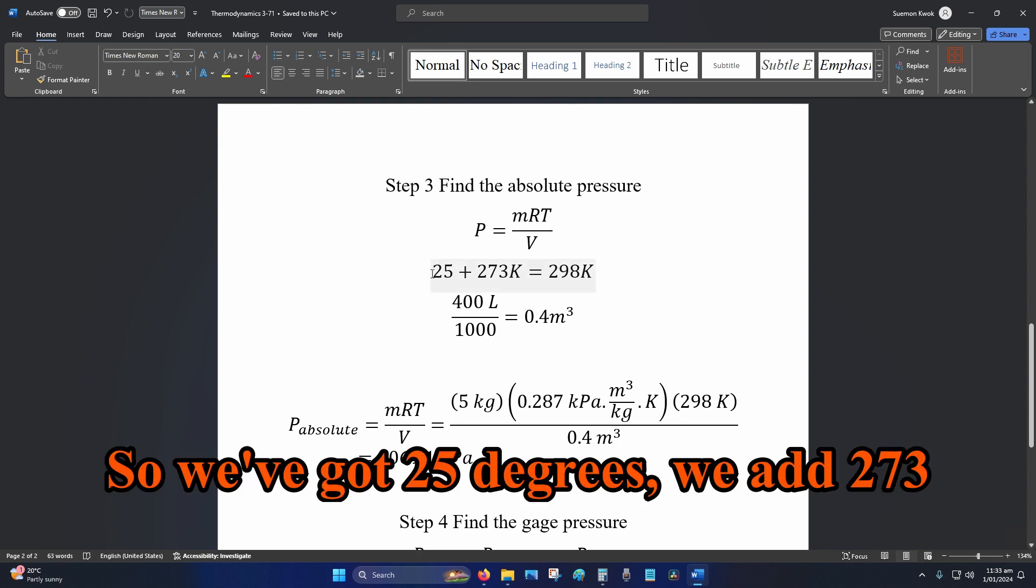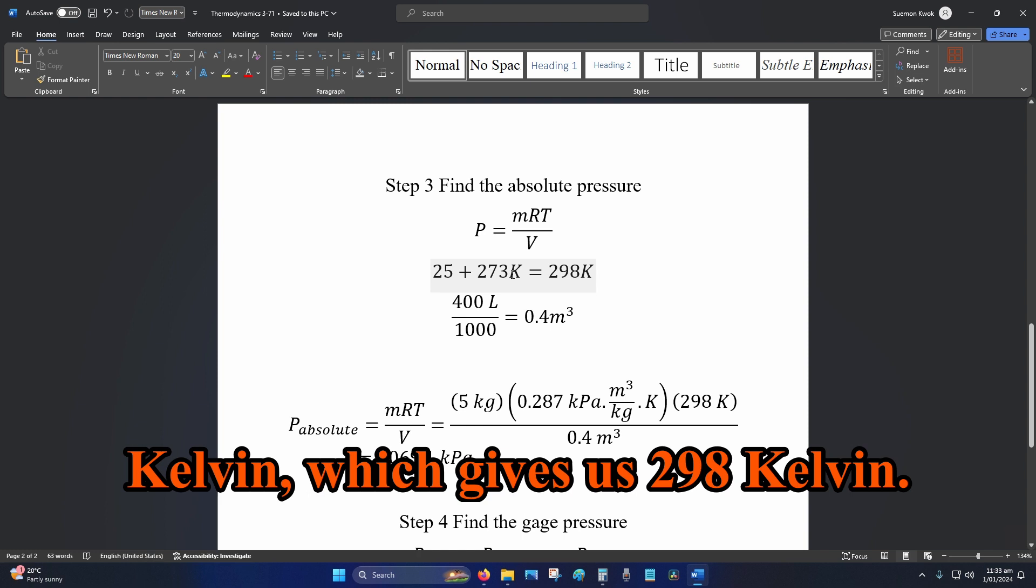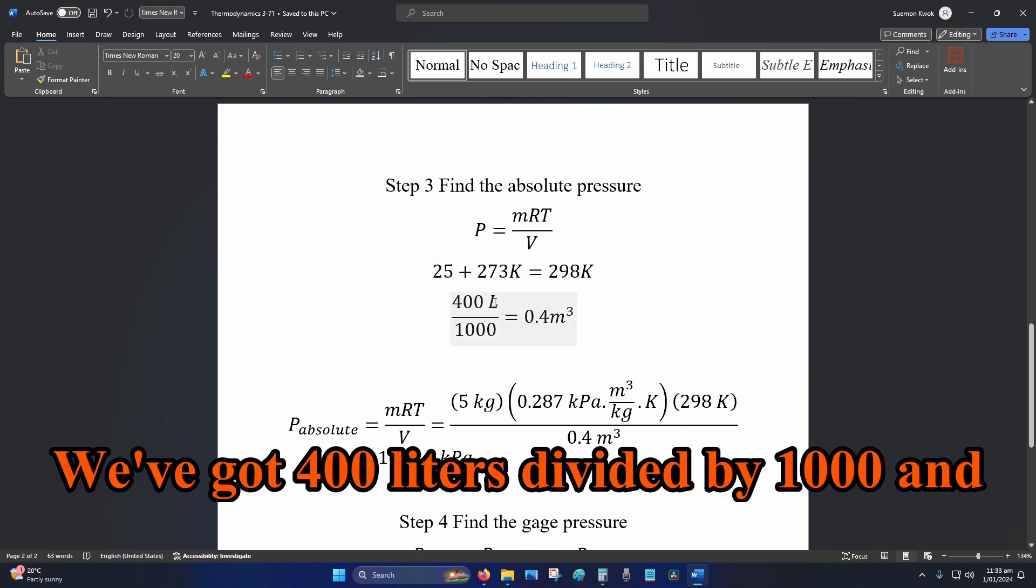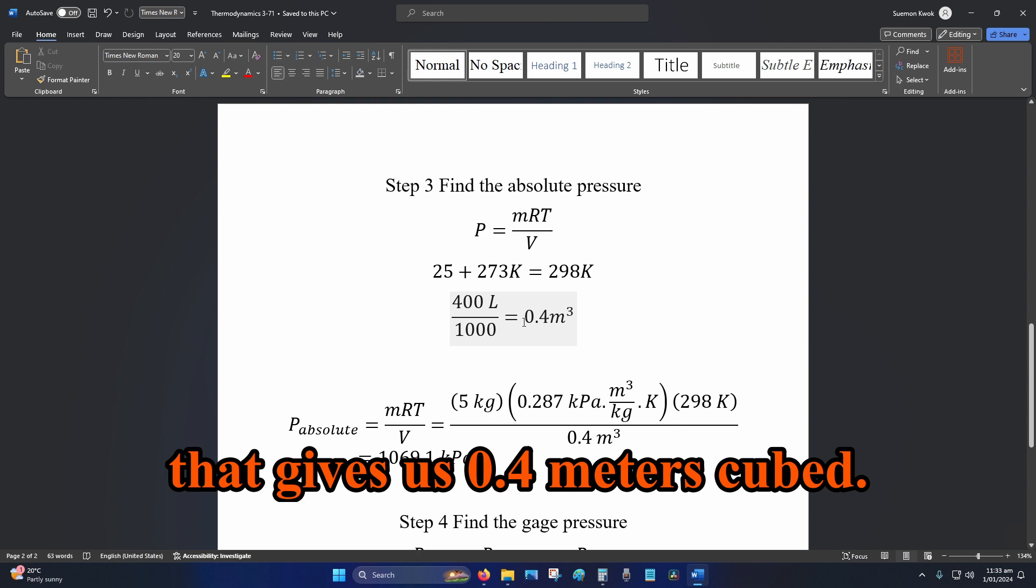So we've got 25 degrees, we add 273 kelvin which gives us 298 kelvin. We've got 400 liters divided by 1000 and that gives us 0.4 meters cubed.